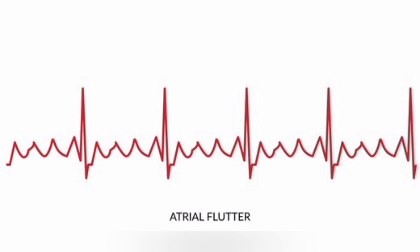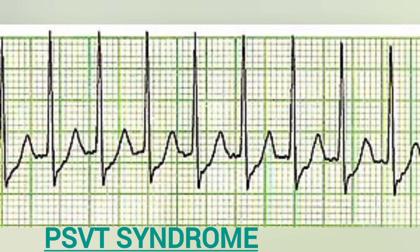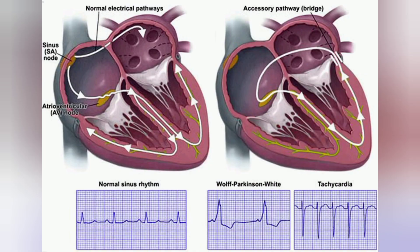Third is atrial flutter. In this type, the heart beats in a regular rhythm but with a fast heart rate. Fourth is paroxysmal supraventricular tachycardia, or PSVT syndrome, in which rapid and regular heartbeats begin and end suddenly, causing inappropriate blood pumping through the heart. Fifth is Wolff-Parkinson-White syndrome, a type of PSVT syndrome in which the heart has an extra electrical pathway between the atria and ventricle, disrupting the timing of electrical signals and causing the ventricles to beat too fast.